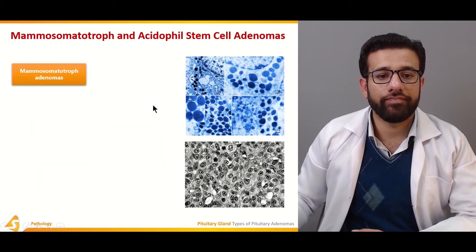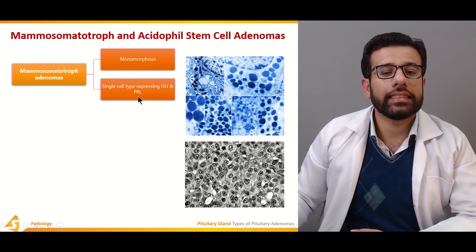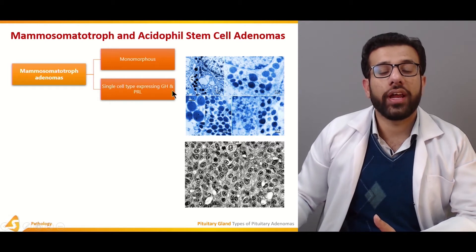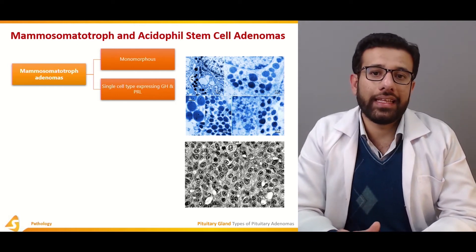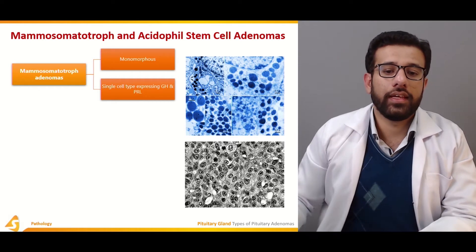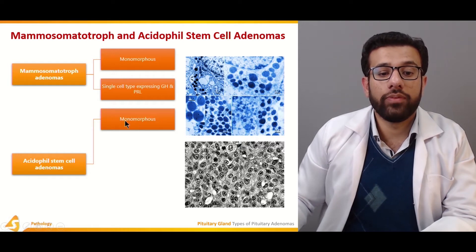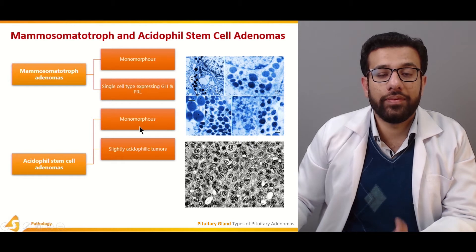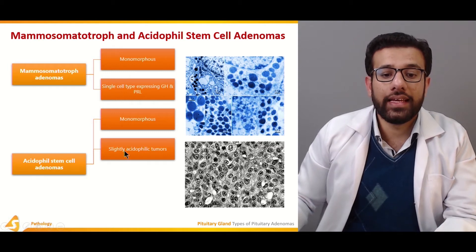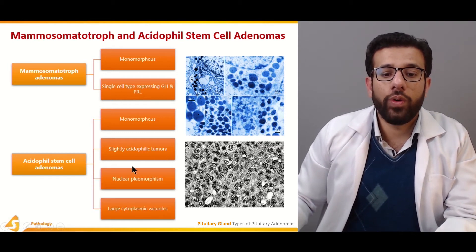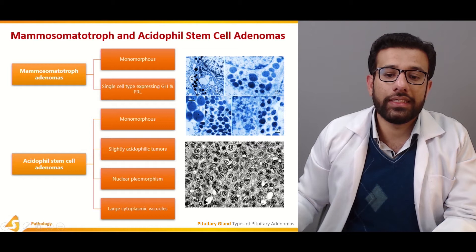The mammosomatotroph adenomas are monomorphous, with a single cell type expressing both growth hormone and prolactin. The acidophil stem cell adenomas are also monomorphous, with uniformity in structure and slightly acidophilic tumors. There can be nuclear pleomorphism as well as large cytoplasmic vacuoles.